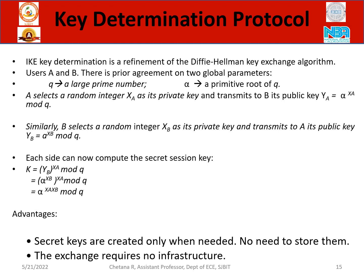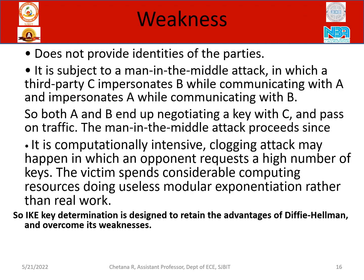The advantage of Diffie-Hellman is that the key is created on the spot with no need to store it, and it requires no infrastructure — so it is simple and can be implemented. But the weakness is that it is subject to a man-in-the-middle attack, where a third person poses as A or B and performs the negotiations, causing the key to be leaked. It is also computationally intensive.